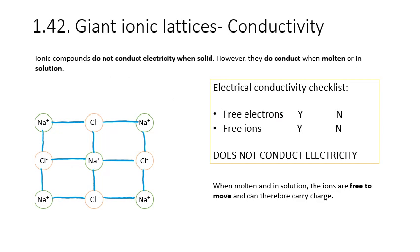Another key property of giant ionic lattices is electrical conductivity. Looking at the rigid structure in 3D, there are no electrons free to move and no ions free to move — so when ionic compounds are solid, they do not conduct electricity. However, when molten, the ions themselves become free to move. Ions being free to move allows the conduction of electricity, so when ionic compounds are in a molten state or dissolved in solution, they do conduct electricity because the ions are free to move.